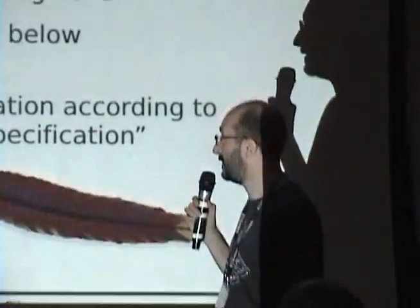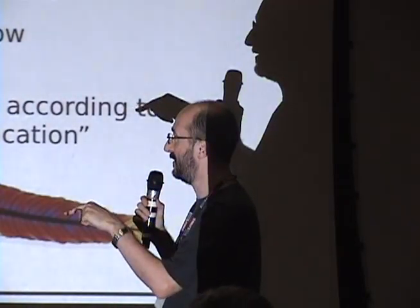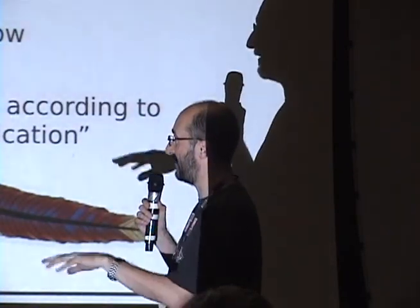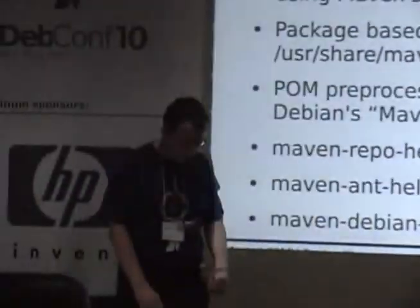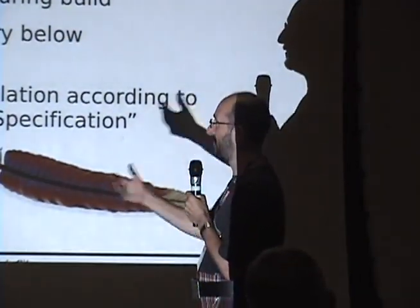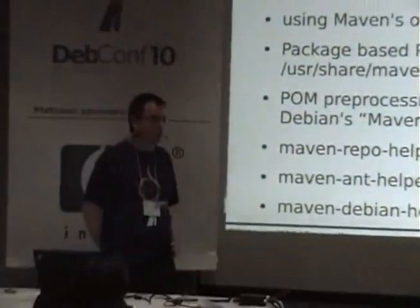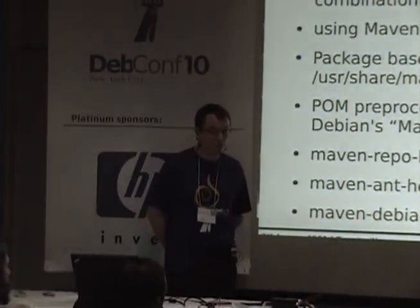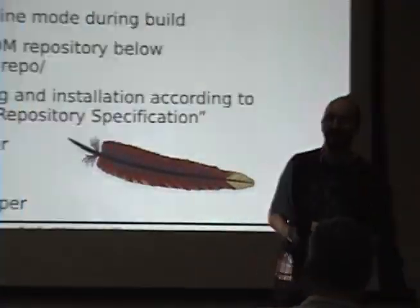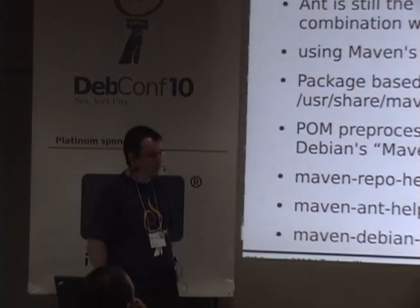There was a question about security updates and rebuilding packages that embed everything. If package B embeds everything from package A and B has a security flaw in its own code — built for stable — finding the exact old version of A that was used at build time would be horrible for stable. We would need a lot of BNMUs for fixing such things. It's easier in unstable but more difficult for stable.